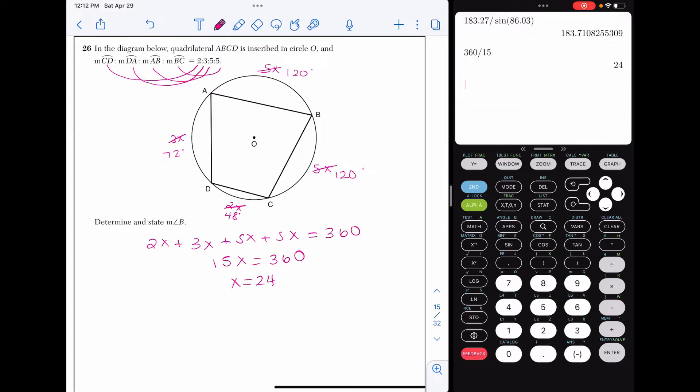Angle B is an inscribed angle, which is always half the measure of its intercepted arc. The intercepted arc is the sum of 72 and 48, which is 120. And then let's divide that by 2. So 120 divided by 2. And the measure of angle B comes out to be 60 degrees.